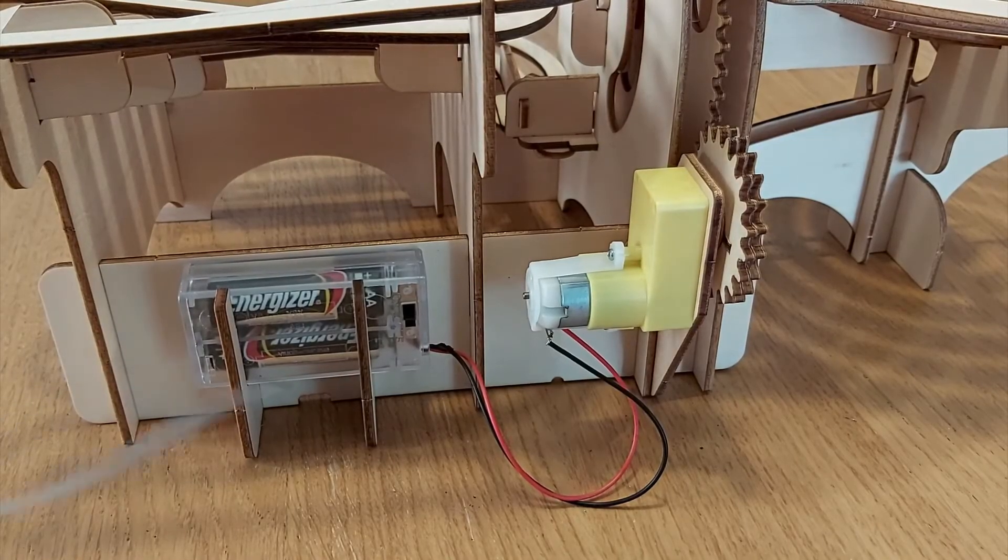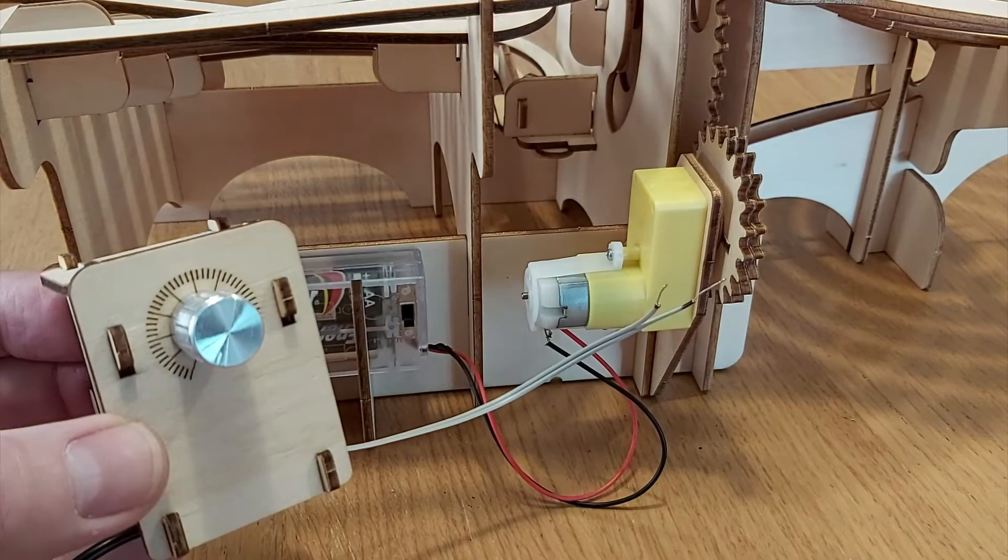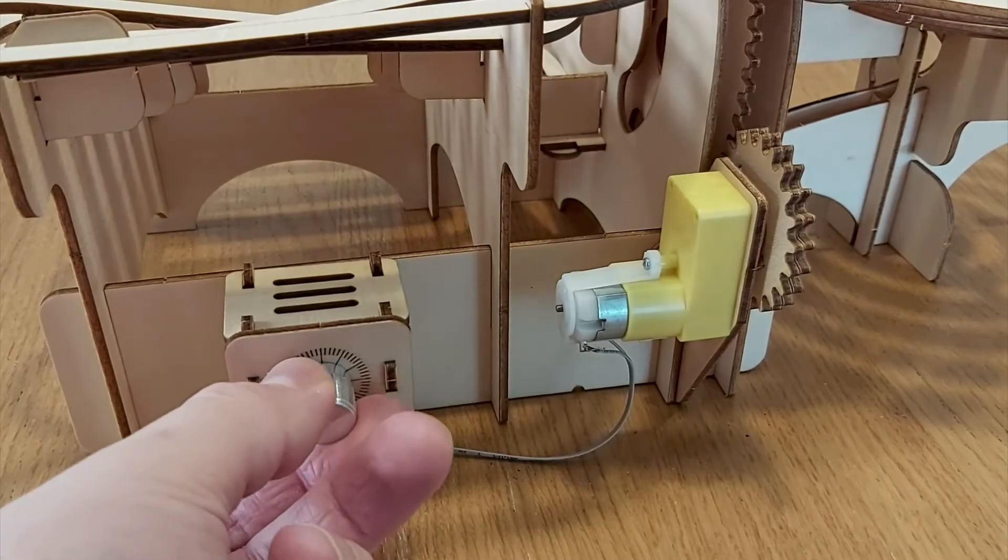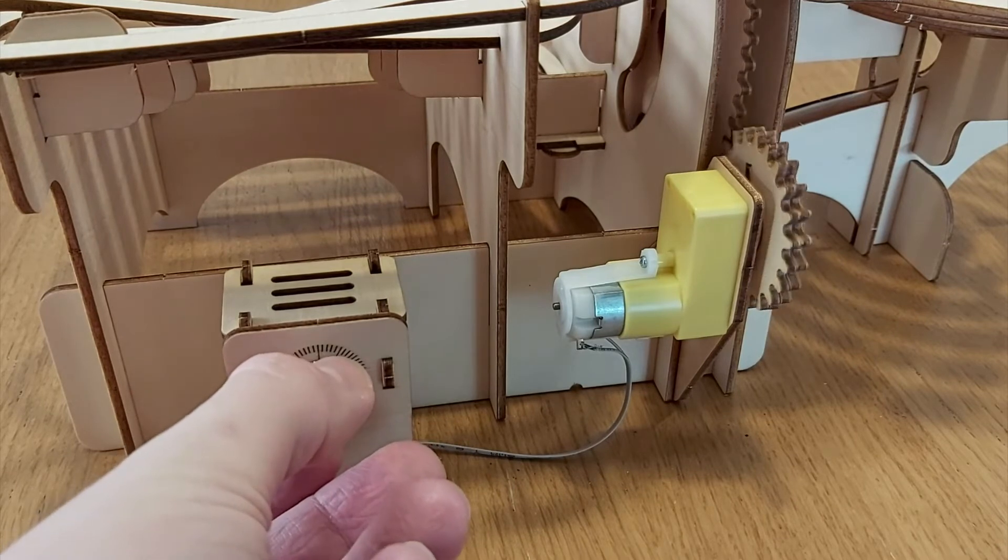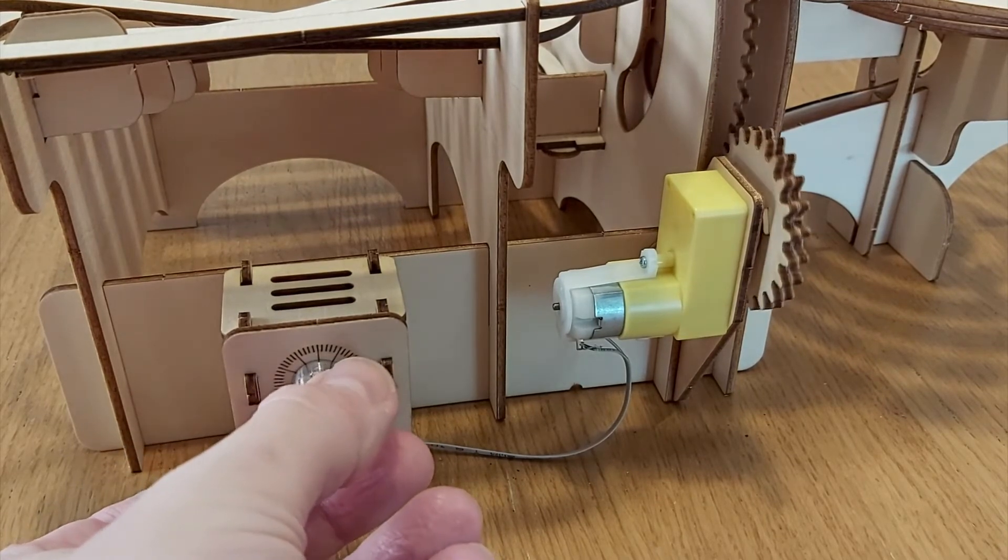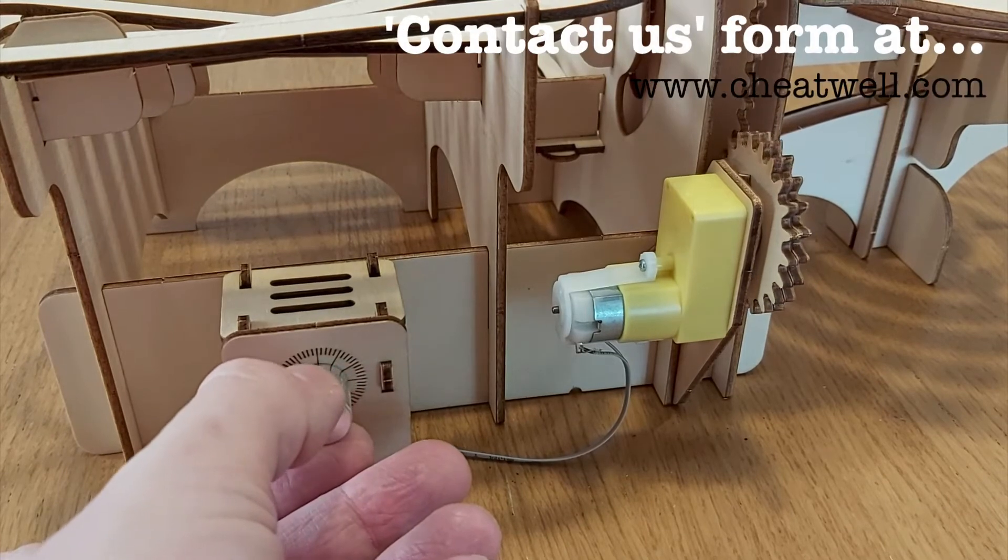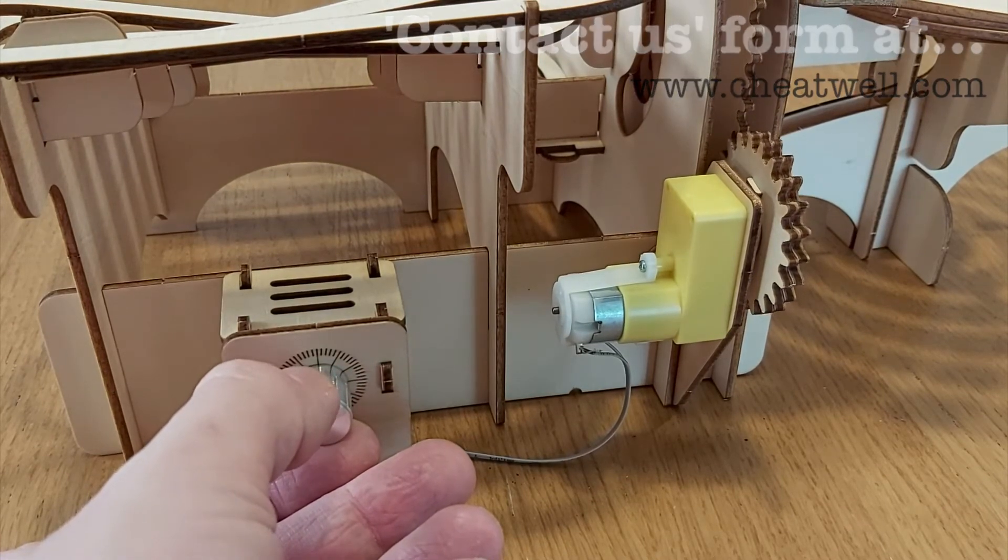I've included a link in the description to where you can get your hands on your own marble run. And if you'd like to add a speed controller, which again comes in kit form, then you can purchase one for £10 plus postage and packaging directly from Cheatwell Games using the contact us form on their website www.cheatwell.com.